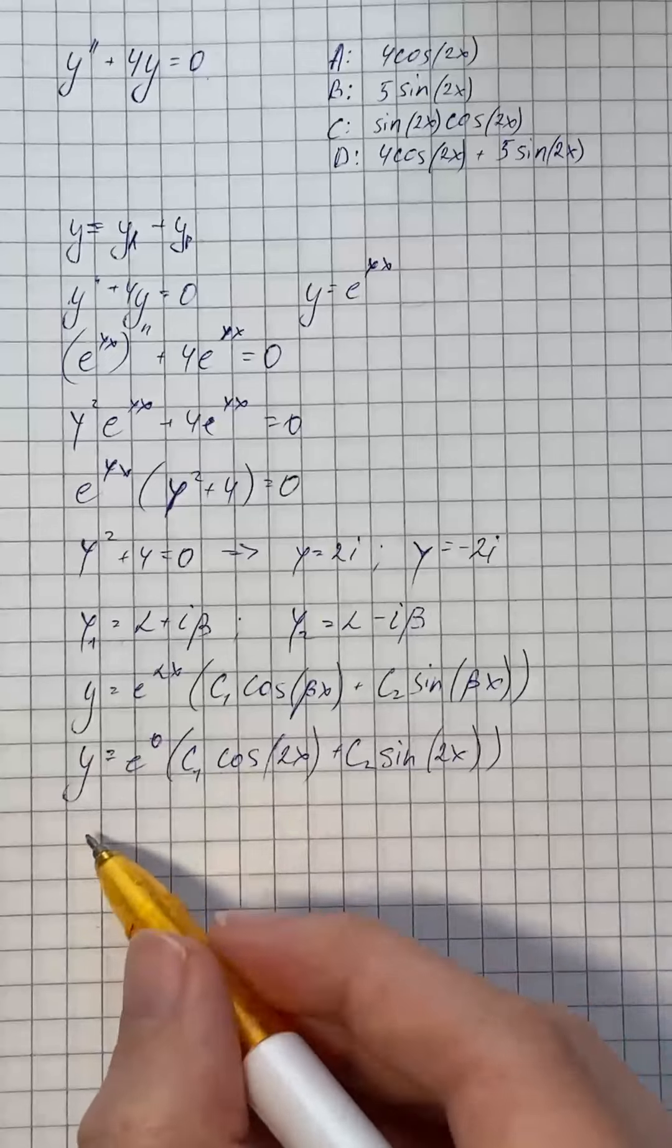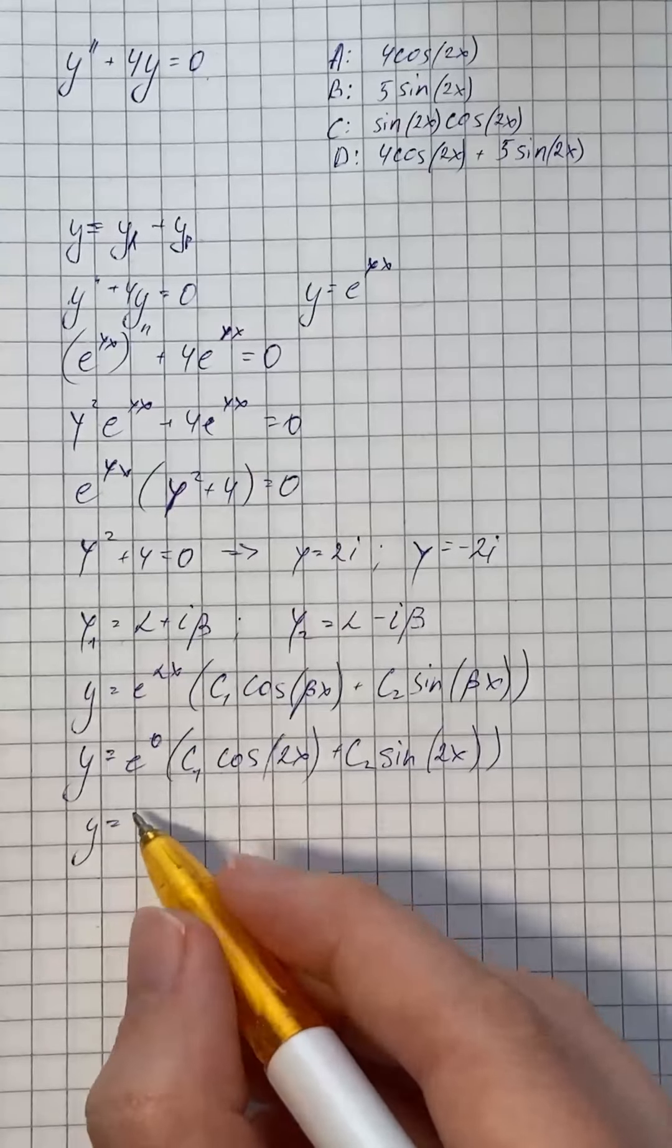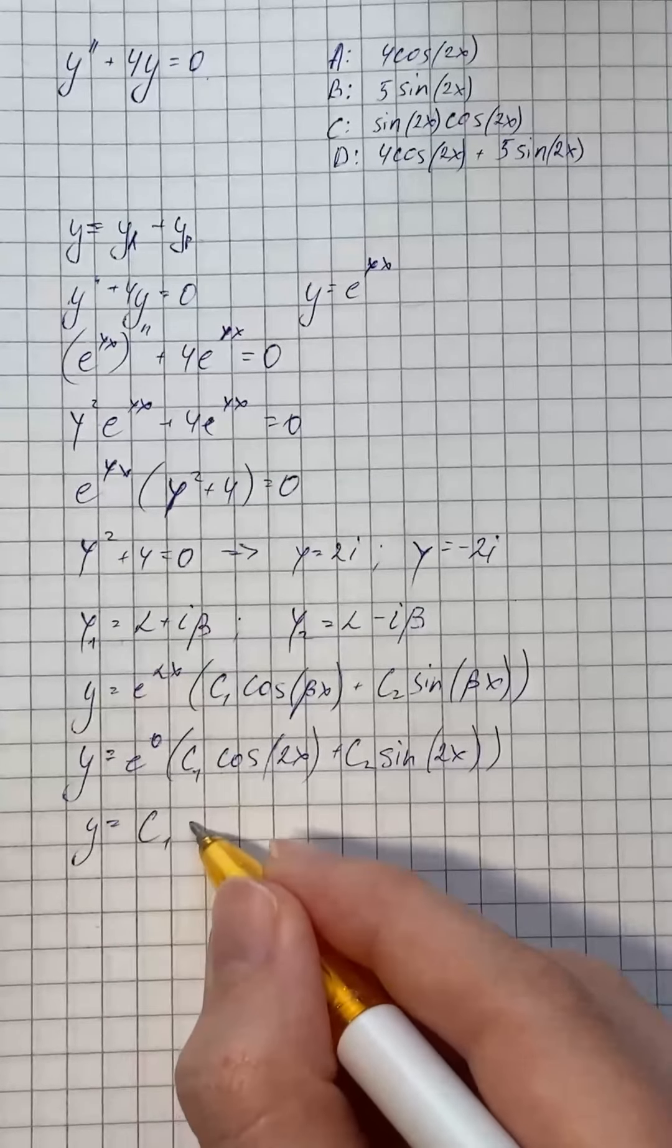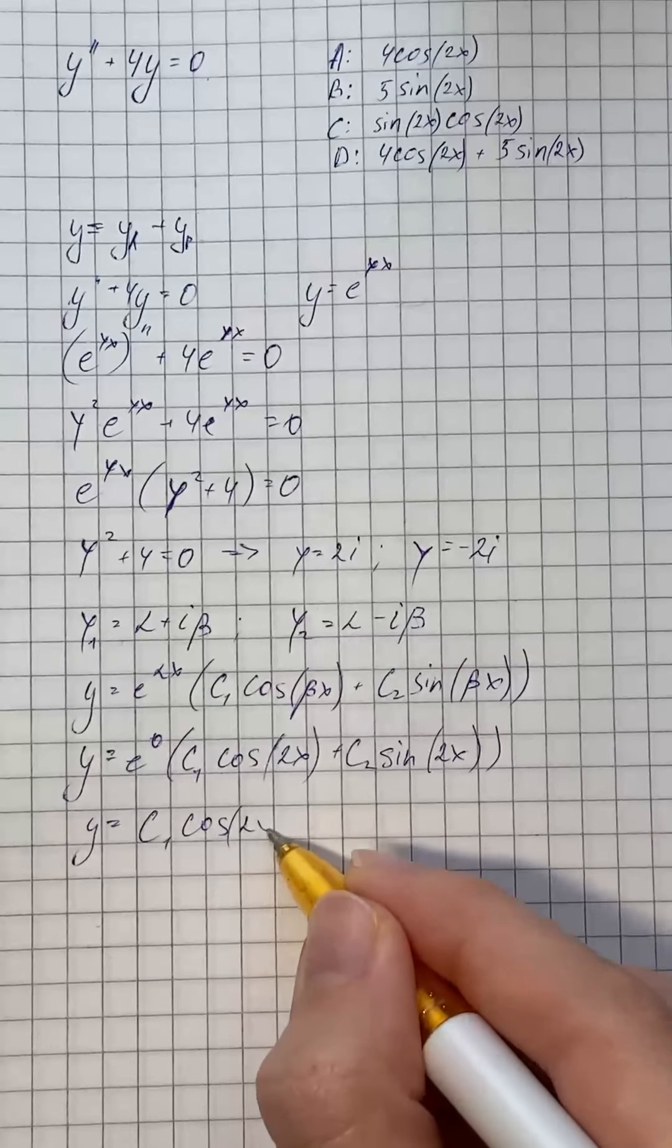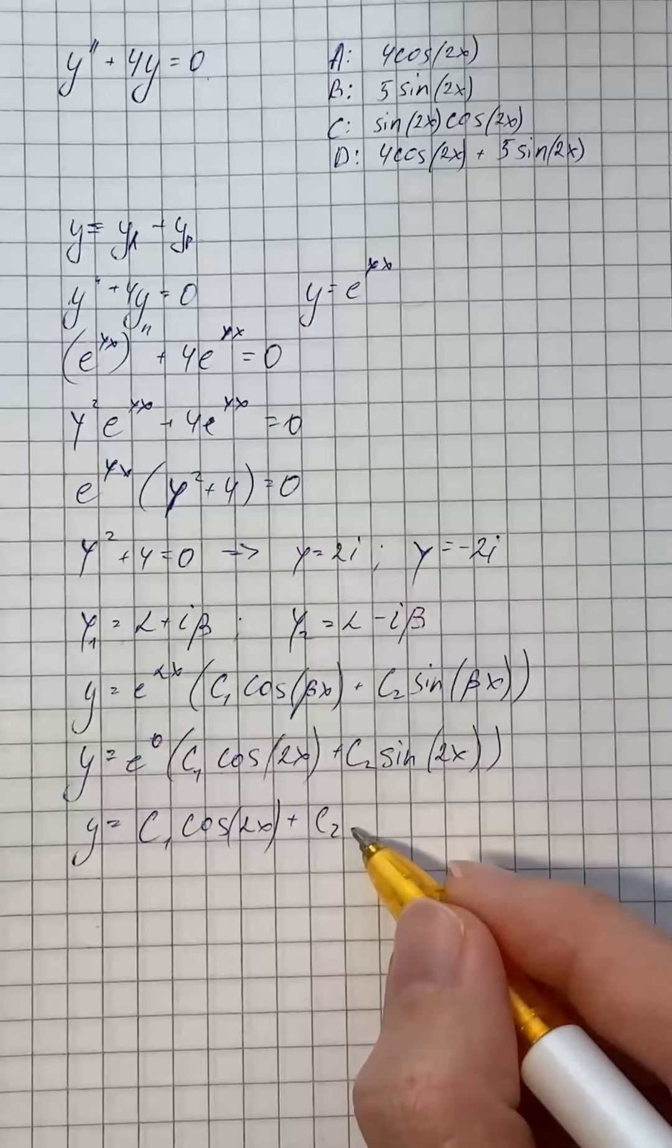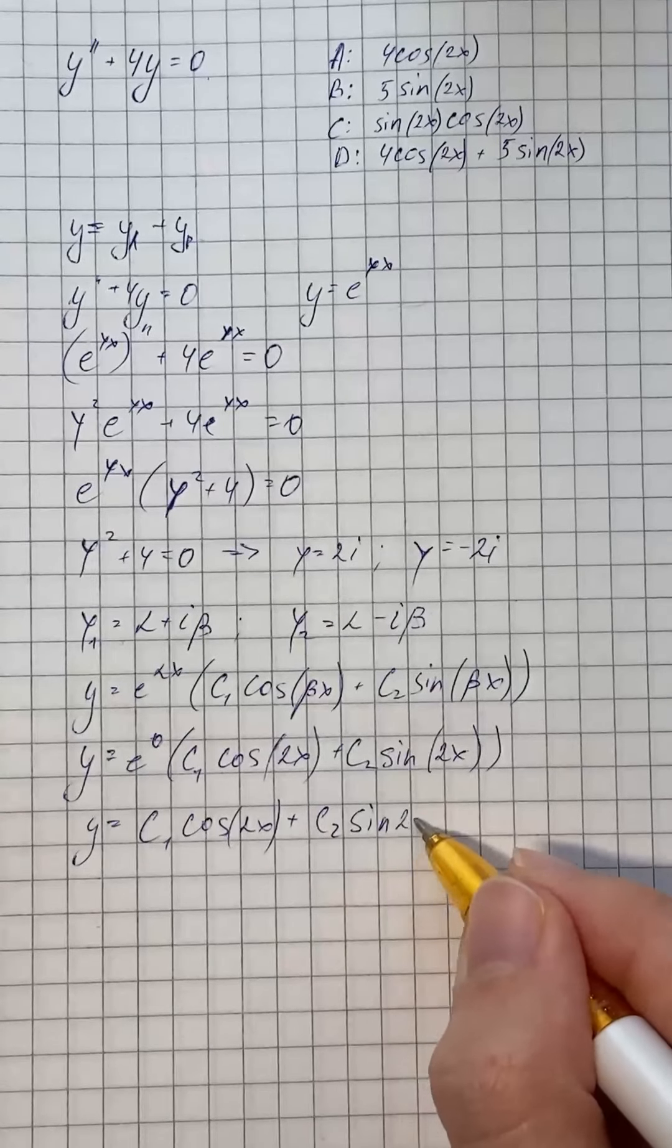So that's going to be our general solution, c1 times cosine of 2x plus c2 times sine of 2x.